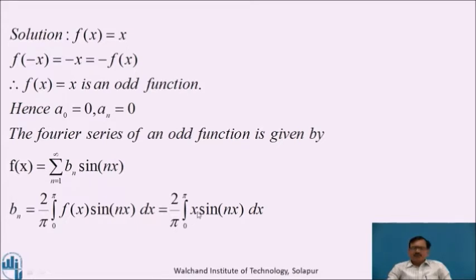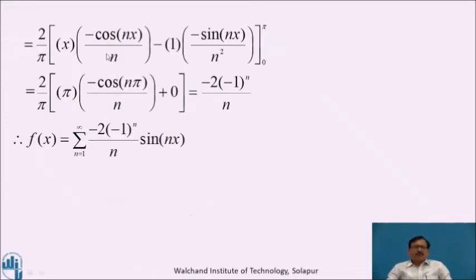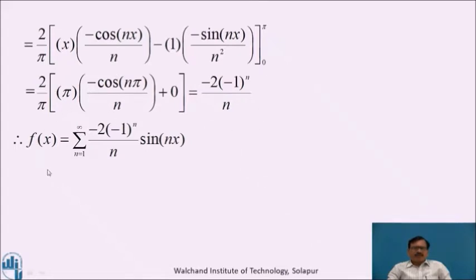We can integrate this using the generalized rule of integration by parts, which equals (2/π): keeping x as it is, integration of sin(nx) is −cos(nx)/n; minus derivative of x is 1, and integration of −cos(nx)/n is −sin(nx)/n², with limit 0 to π. Putting the upper limit x = π: π · (−cos(nπ)/n) − (sin(nπ)/n²) = 0. For the lower limit, both terms are zero. Therefore f(x) = summation from n=1 to infinity of −2(−1)ⁿ/n · sin(nx).